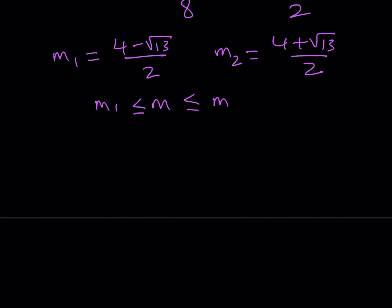So you want m to be between these two values. Let's go ahead and write it down. I can write it like this, and then just replace m1 with 4 minus root 13 over 2, and this one with 4 plus root 13 over 2.